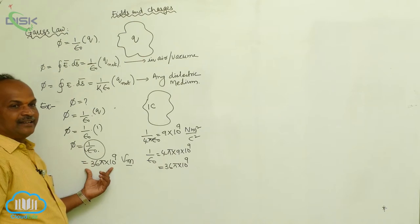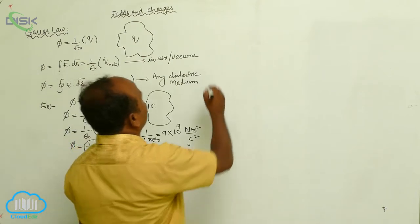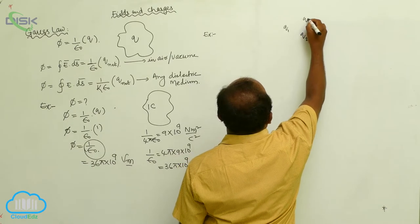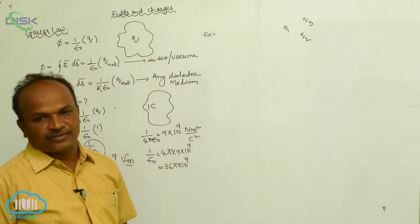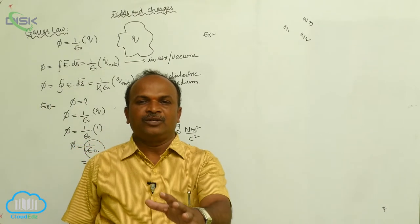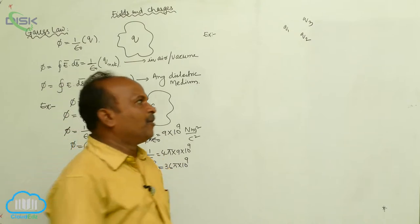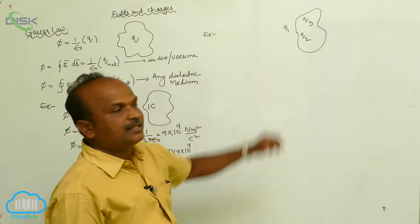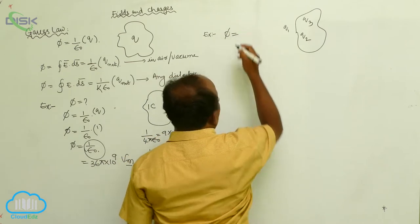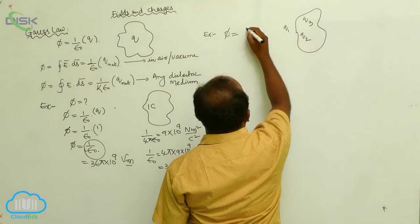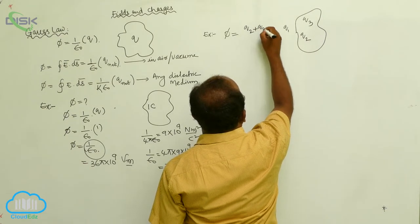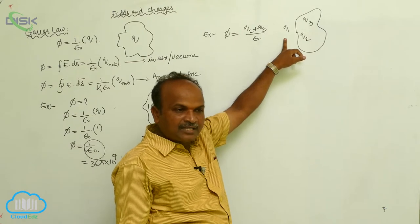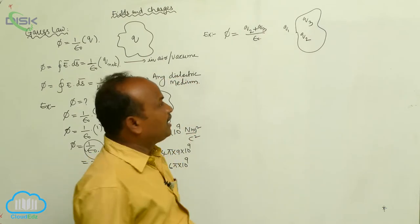Consider another example. There are charges Q1, Q2, and Q3. Before calculating the flux, you must define the closed surface. Suppose this is the closed surface. What is the flux passing through that closed surface? Phi equals Q_net by epsilon-not. In this closed surface the net charge is Q2 plus Q3 by epsilon-not. Do not consider Q1 because it is outside the closed surface.